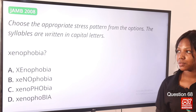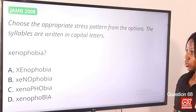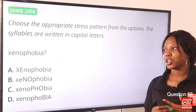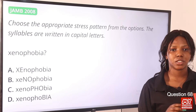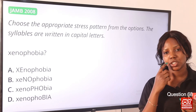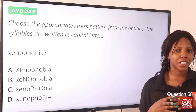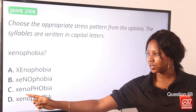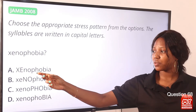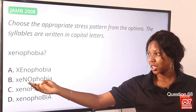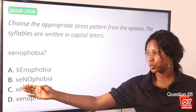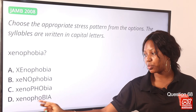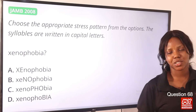Moving on to question 68. Choose the appropriate stress pattern from the options; the syllables are written in capital letters. The word is pronounced as xenophobia. From the pronunciation, we can identify the stress on the third syllable — 'pho.' We can see this in option C, where 'pho' is written in capital letters. So option C is the correct answer.